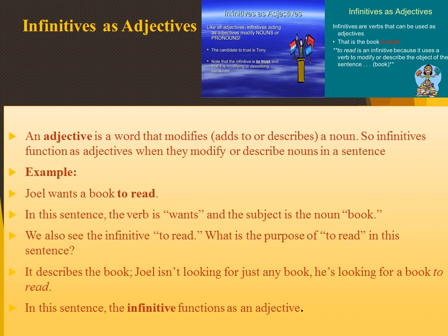When do infinitives act as adjectives? An adjective modifies, adds or describes a noun. Infinitives function as adjectives when they modify or describe a noun in a sentence. Example: 'Joel wants a book to read.' The verb is 'wants' and the subject is the noun 'book.' The infinitive 'to read' describes the book — Joel isn't looking for just any book, he is looking for a book to read. So when the infinitive gives more information about the noun, qualifying it, it is acting as an adjective.